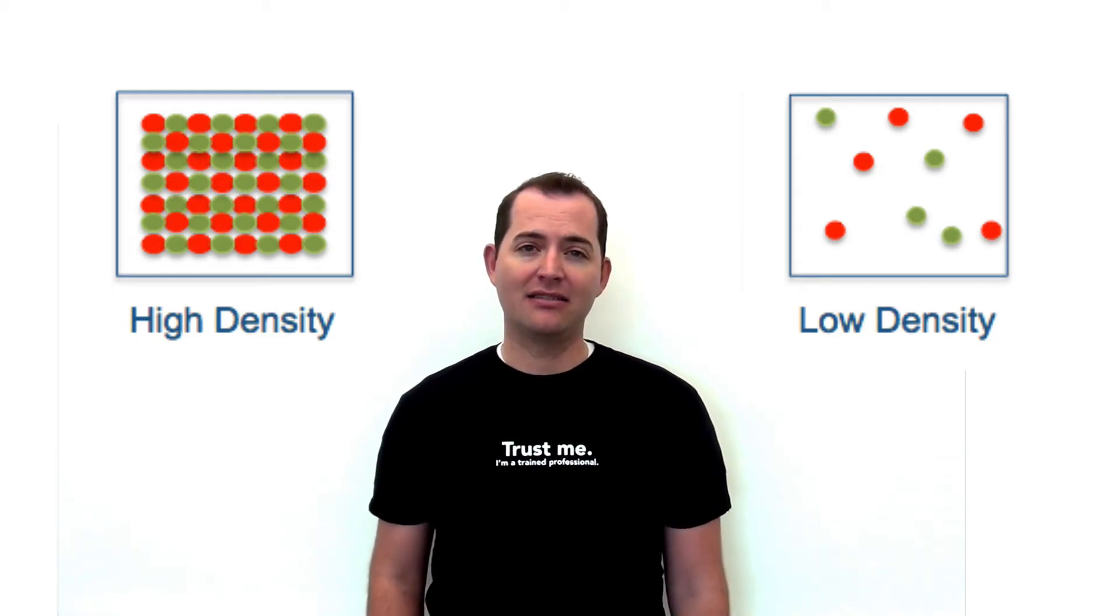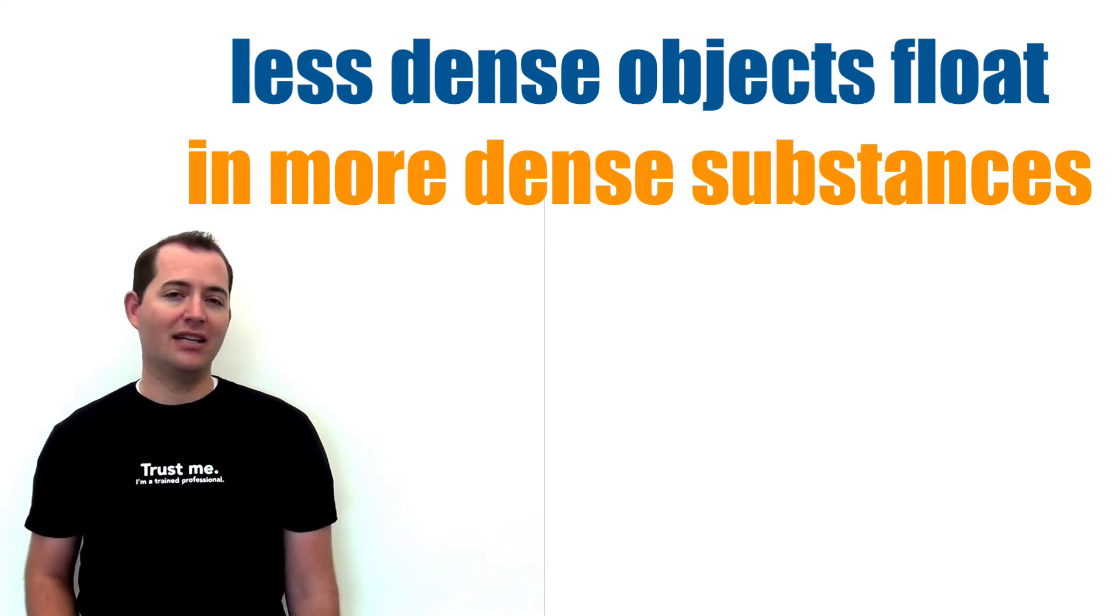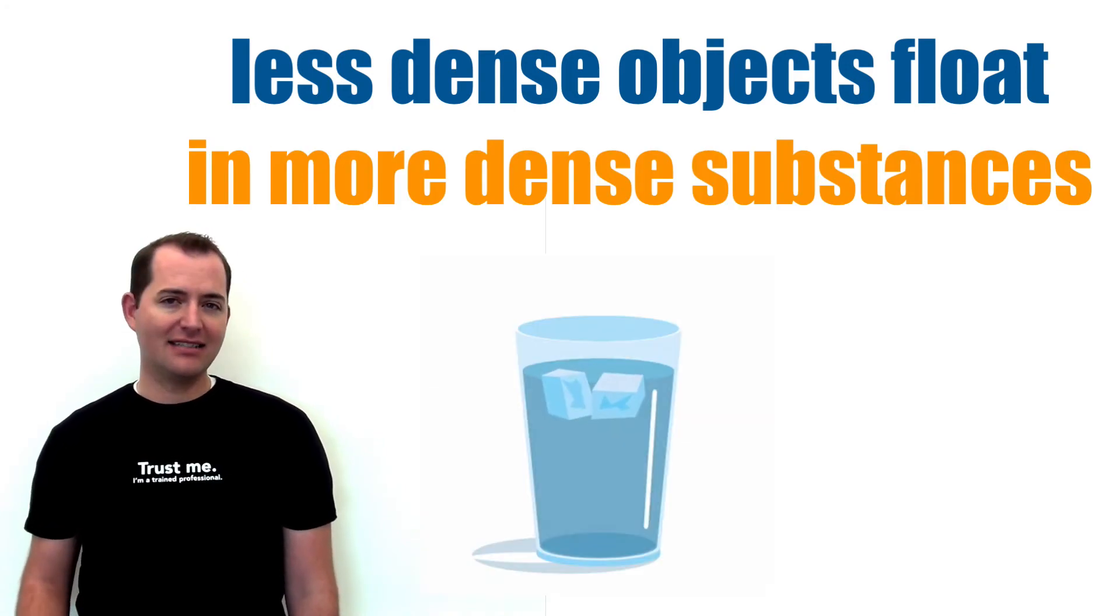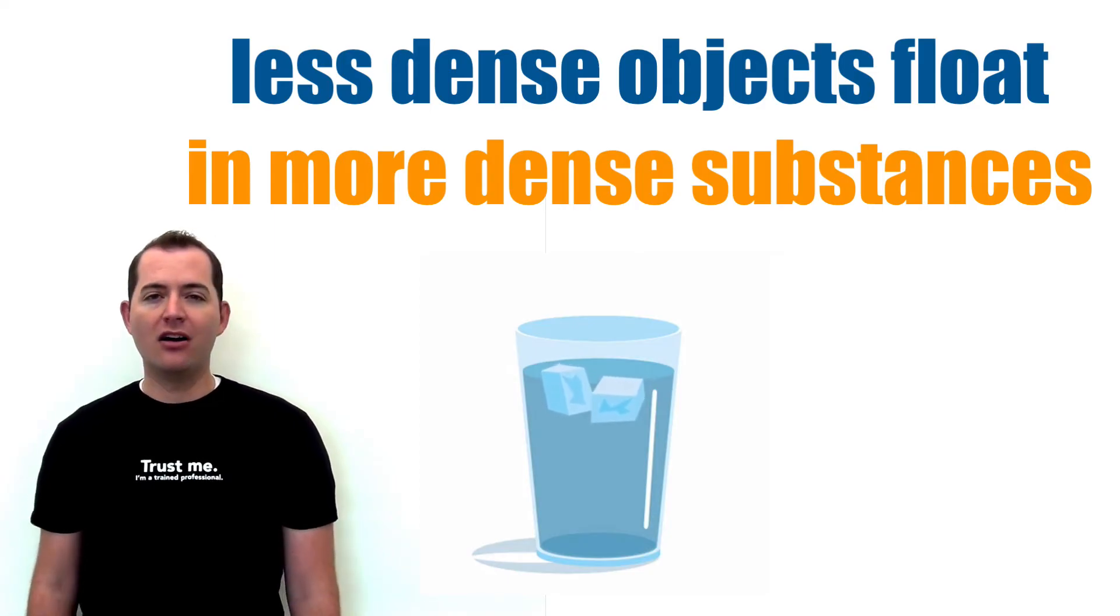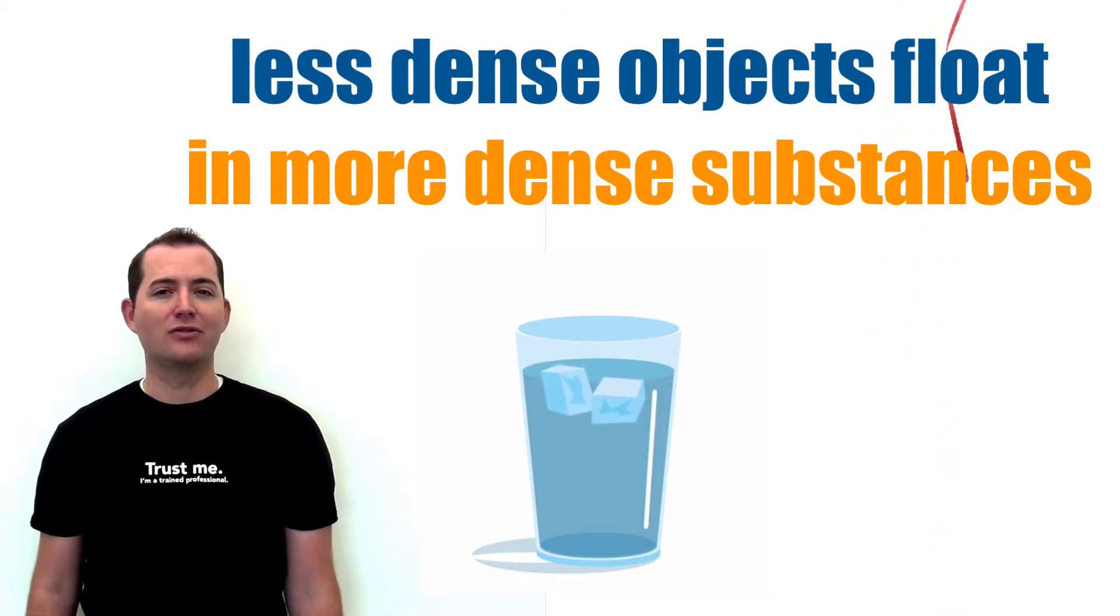Less dense objects or substances will float in more dense substances. For example, ice is less dense than water and will float in it. Also, a helium-filled balloon is less dense than air, which is why it will rise or float in the air.